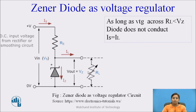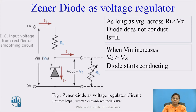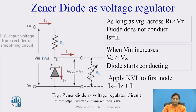As long as the voltage across the load resistance RL is less than the voltage across the Zener, the diode does not conduct — it remains as an open circuit. At that time, the value of input current IS is always equal to the value of IL. When input voltage increases, output voltage also increases, and when output voltage becomes greater than or equal to the voltage across the Zener, the Zener diode starts conducting. Applying KVL to this node, we get: IS equals Iz plus IL, i.e., incoming current equals outgoing current.